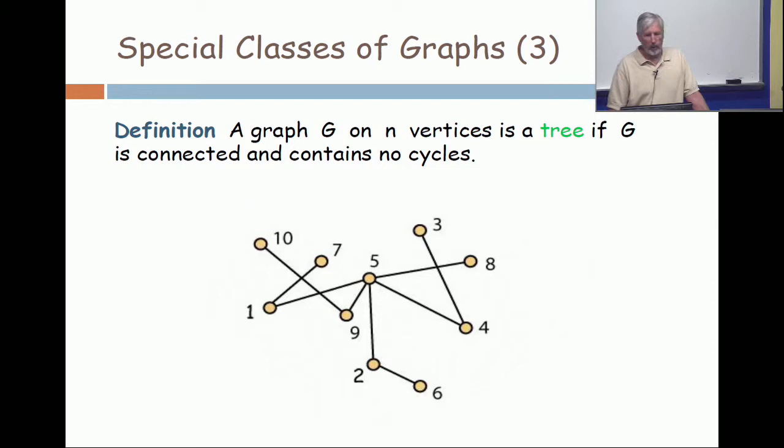So I show here a graph with vertex set 1 through 10, and by inspection you can see that this graph is connected between any two vertices. There is a path and there are no cycles as subgraphs of this graph.